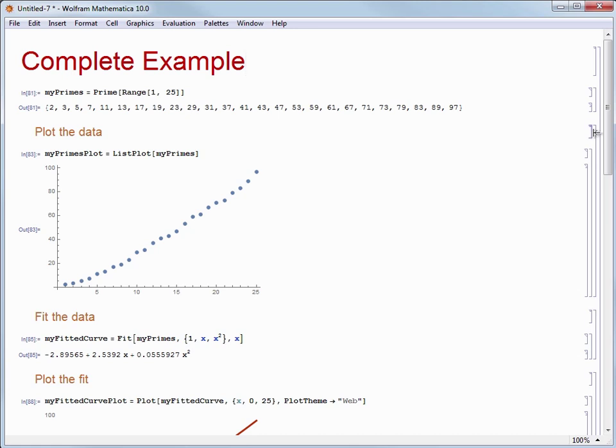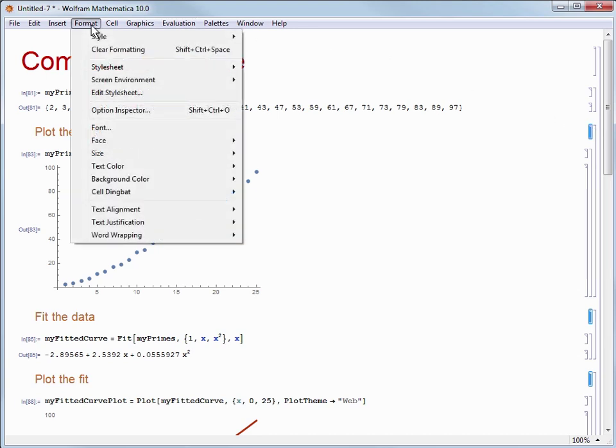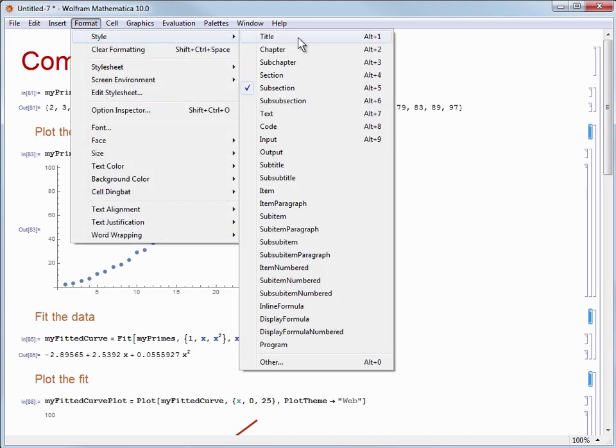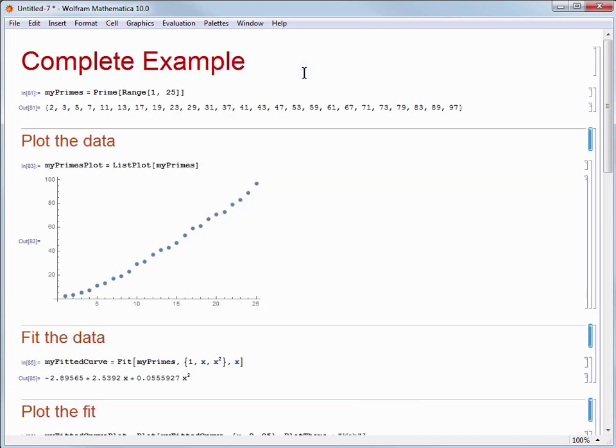And when I do that it selects all of the cells of that type in my notebook. That is an easy way to convert from one cell type to another or to apply formatting like changing colors or sizes. So let's hit Alt and then click to highlight all of the subsections. And then we'll use format, style, and section to change them into section cells instead.